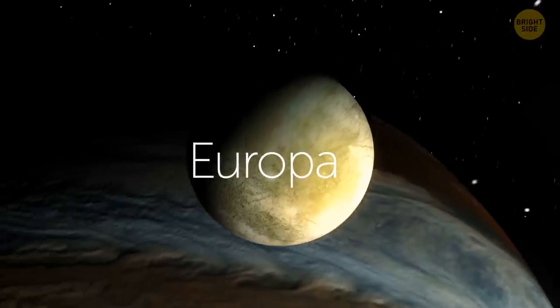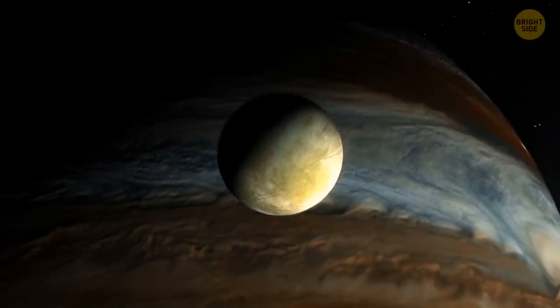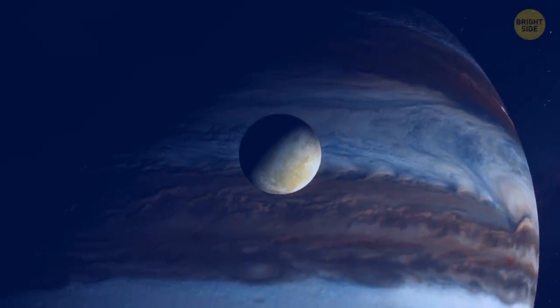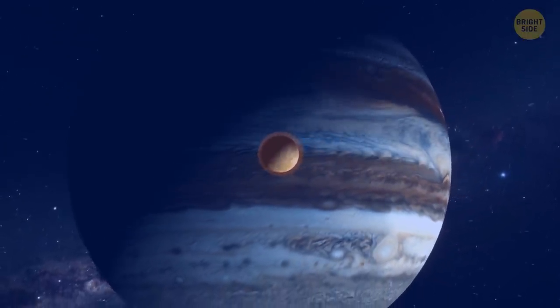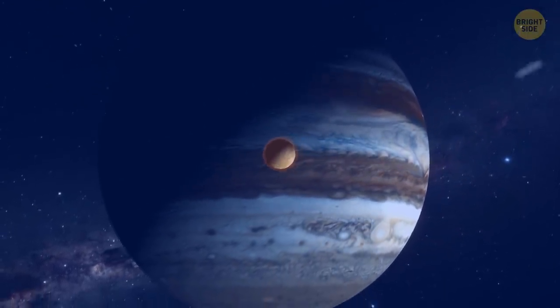But Europa, one of Jupiter's moons, definitely breaks the rule. It's outside of the Goldilocks zone, but still kept warm. Not from the Sun directly, but Jupiter and its moons that actually pump energy into Europa.